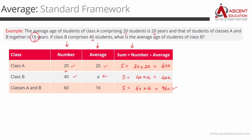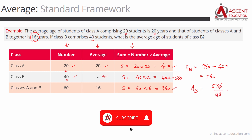For both classes, the sum of ages is 960. Class A alone has a sum of 400. So the sum of ages of Class B equals 960 minus 400, which is 560. The average age of students of Class B equals sum of their ages divided by number of students: 560 divided by 40, which is 14. So 14 years is the average age of students of Class B.